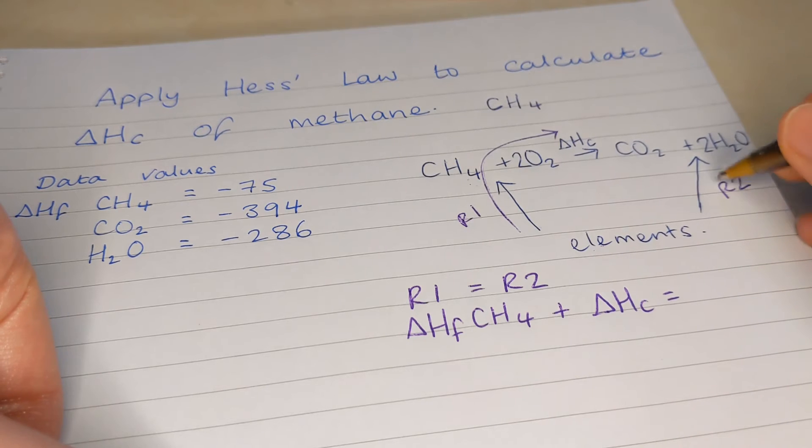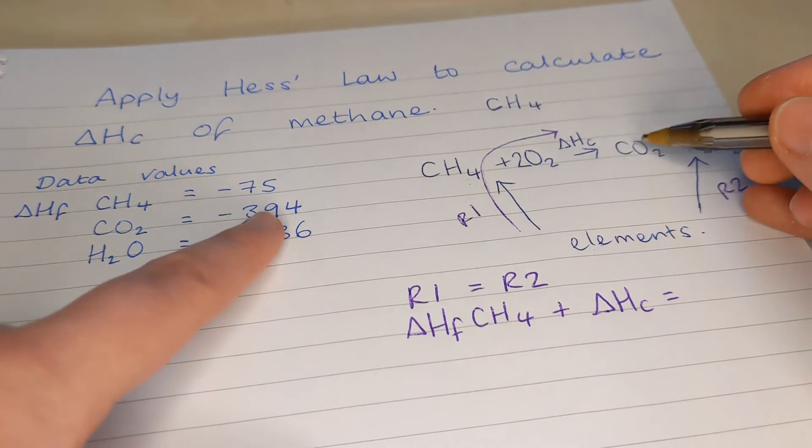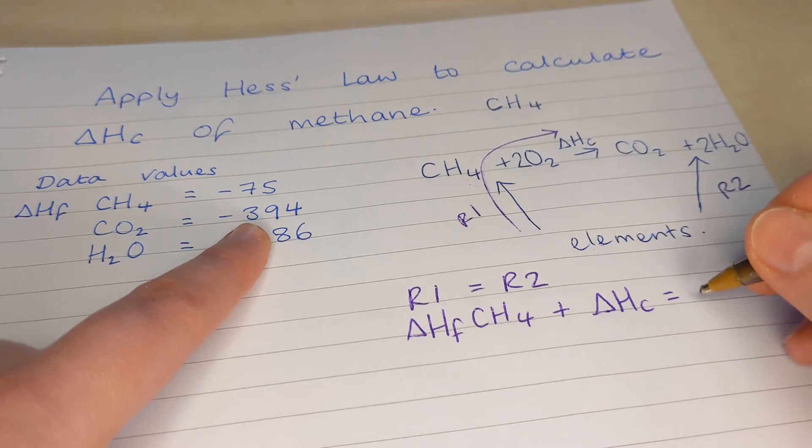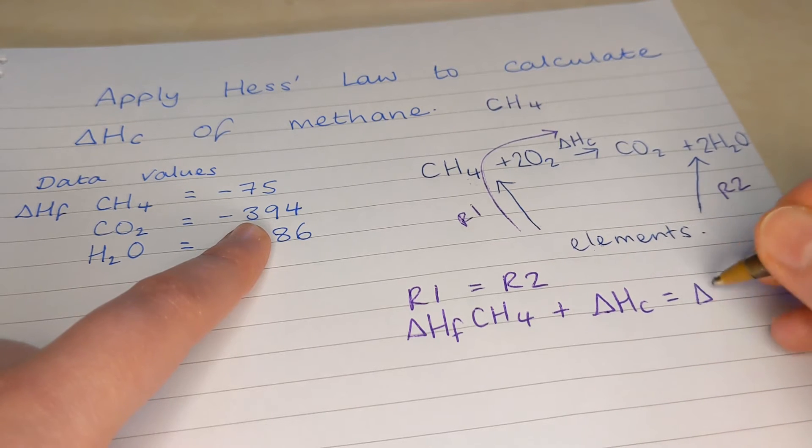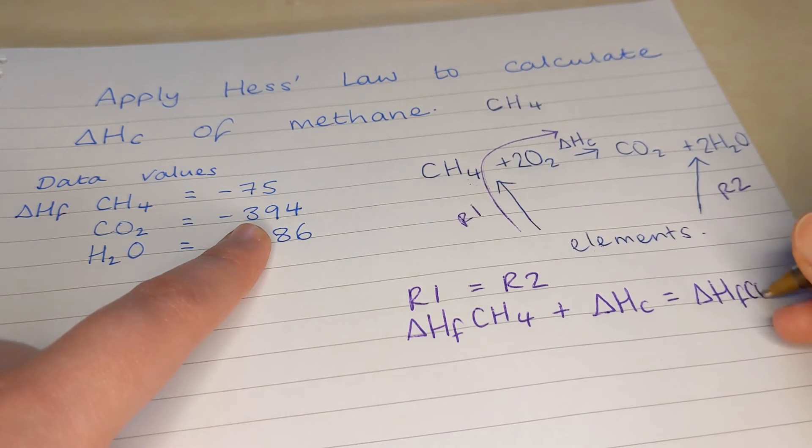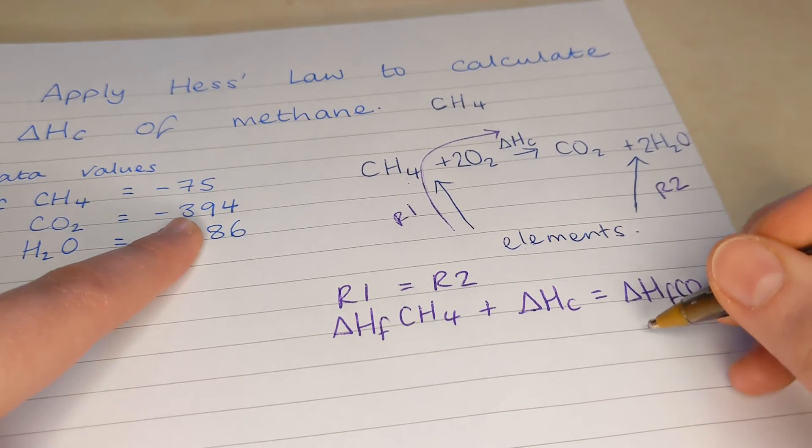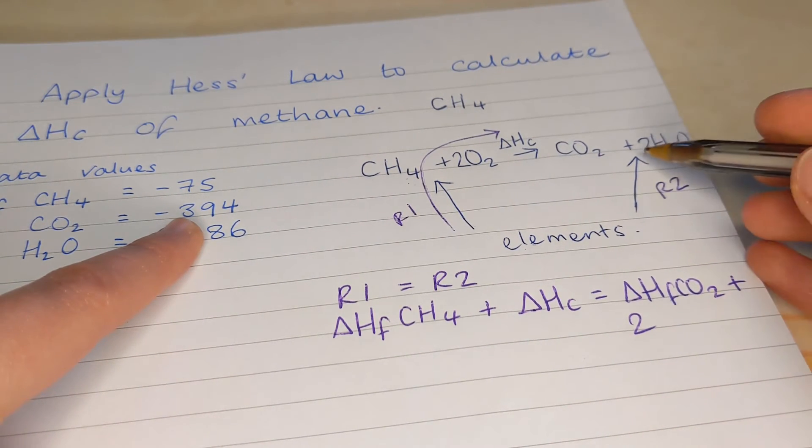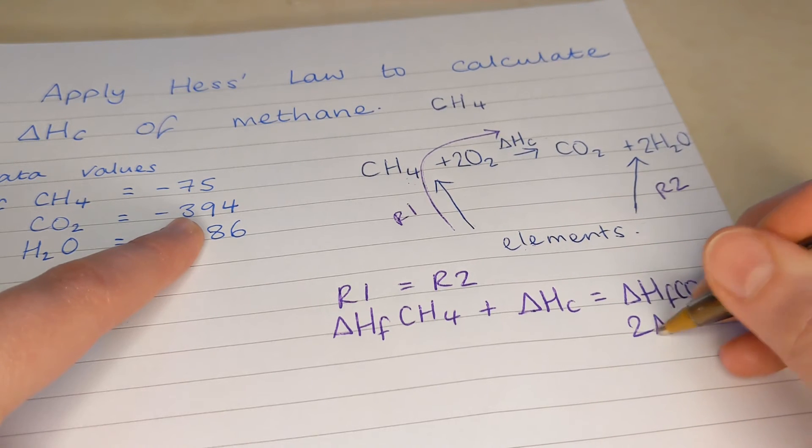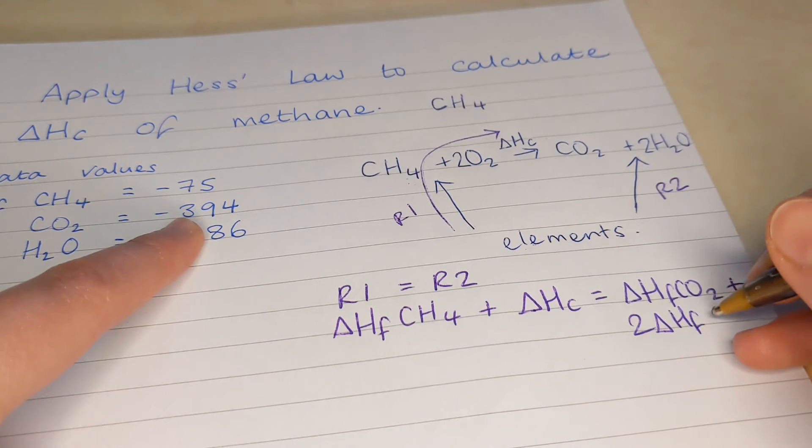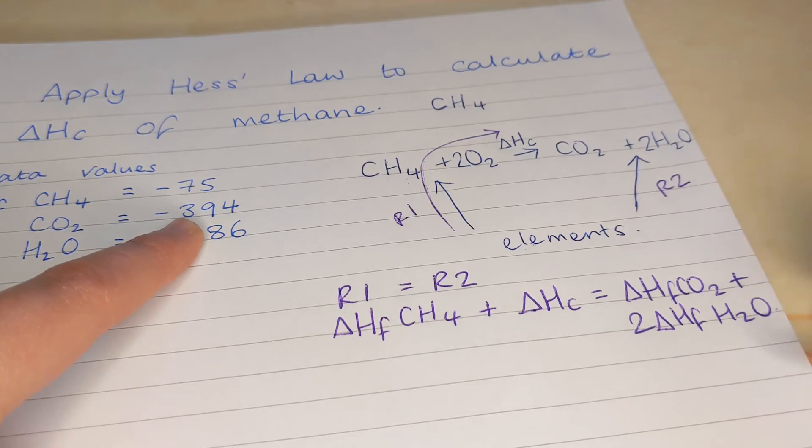Write it equal to what's in route two. We've got one carbon dioxide, which is... oh wait, we'll do the numbers next. So delta H F CO2 plus... oops, didn't leave enough space. Two. We've got two lots of this. Two delta H formations of water.